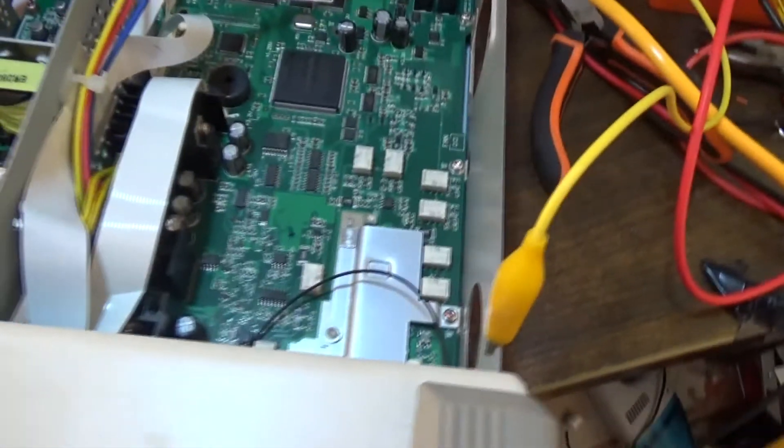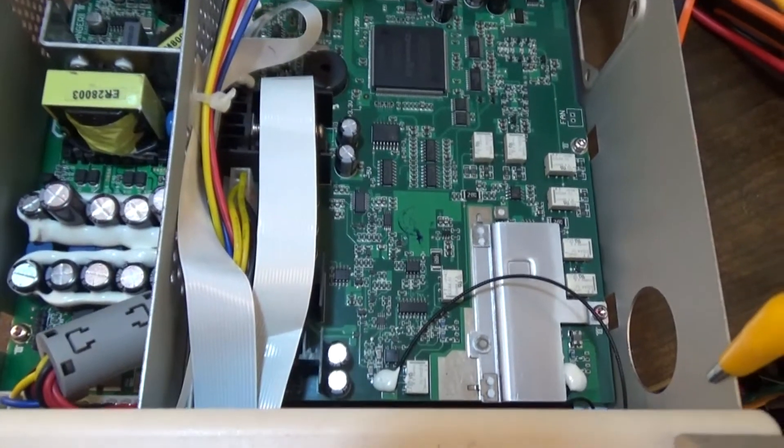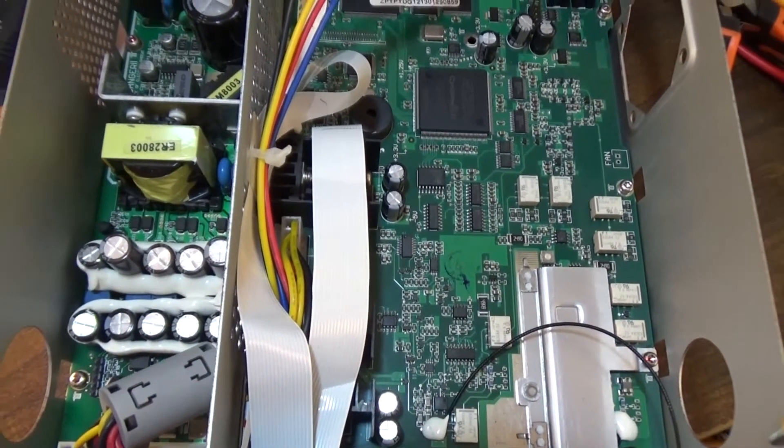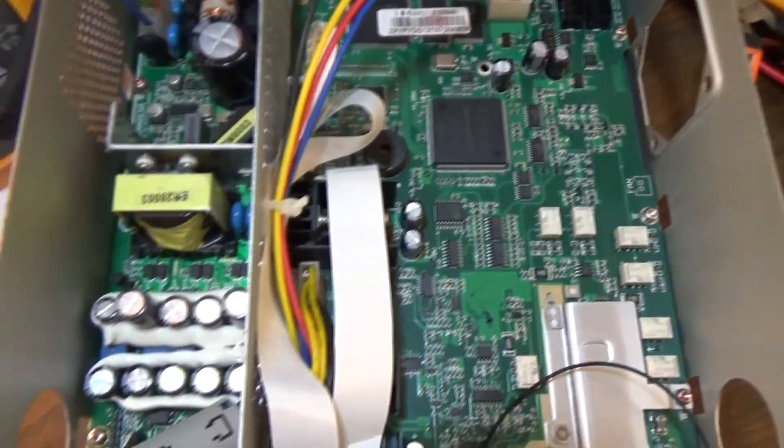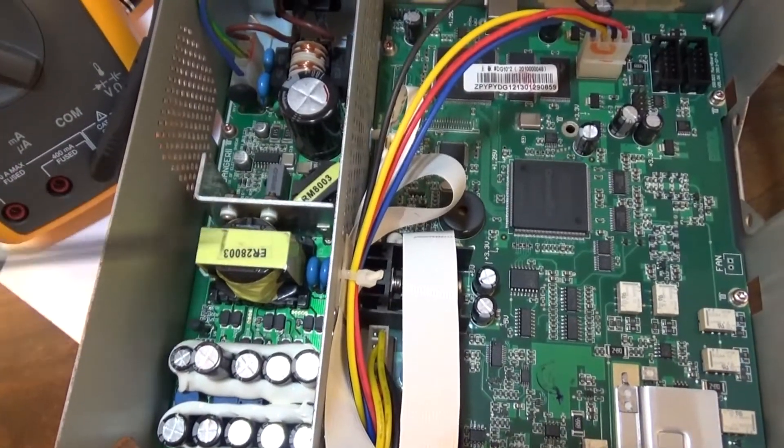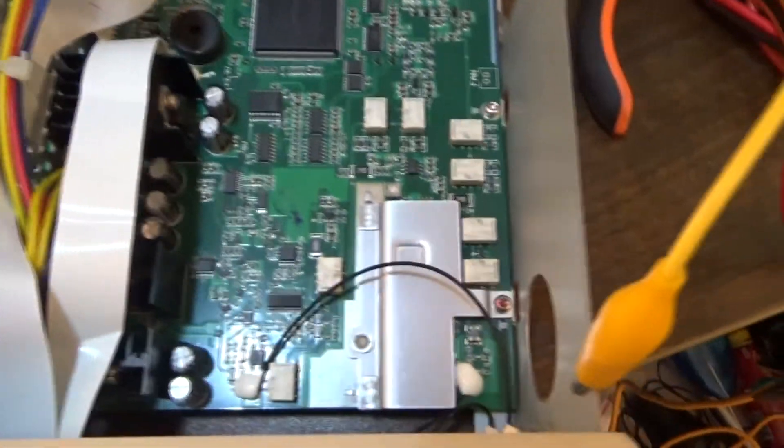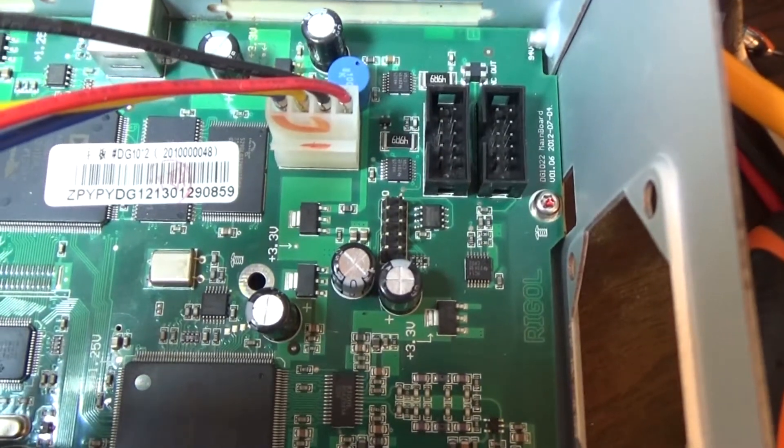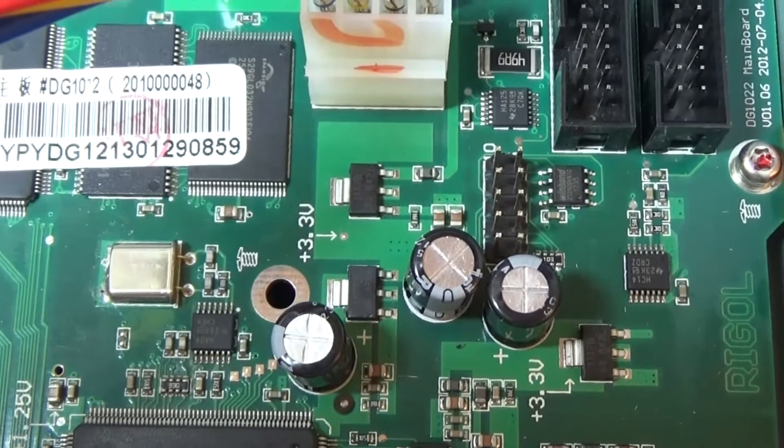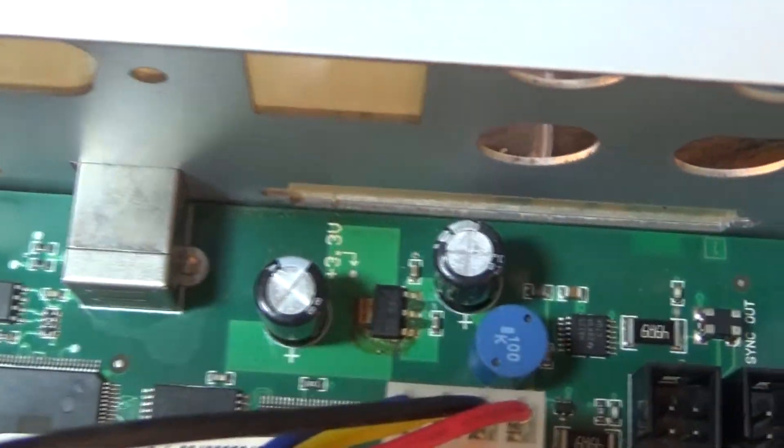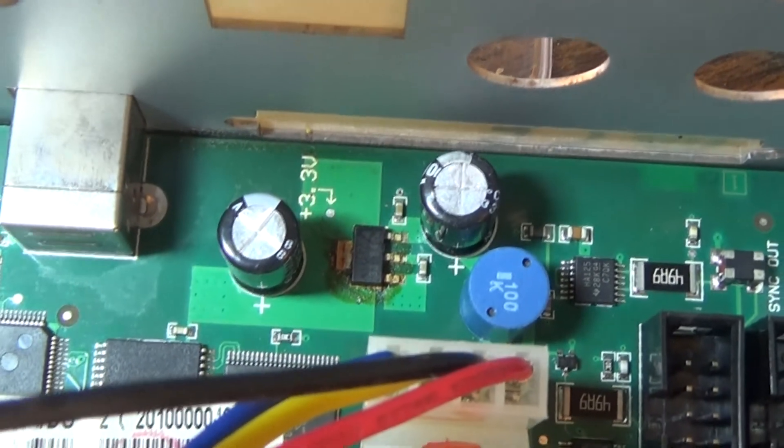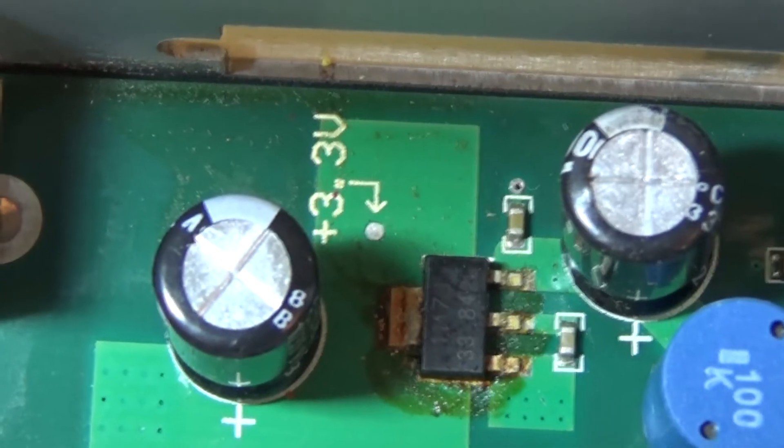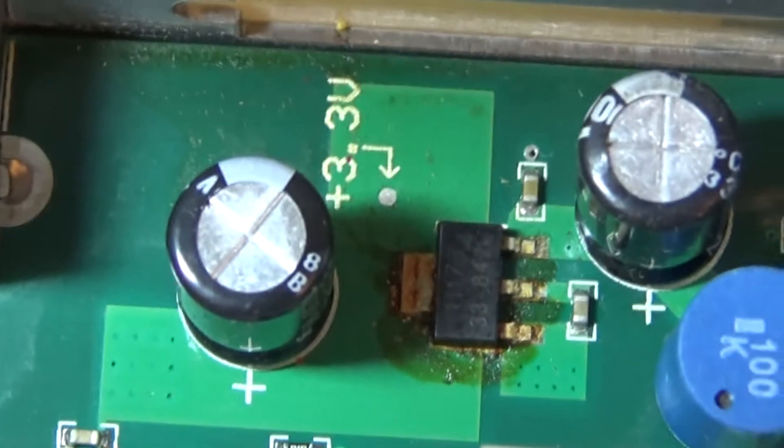I have already opened the function generator. Here we have the power supply, which is here. On the board there are several test points here. We have the 3.3V. I have done some tests and I have found this one, which is at the back. It was giving me 2.26 volts. I think this one is the damaged part.